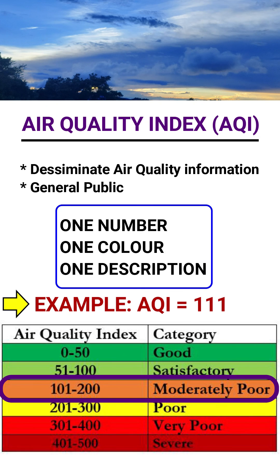Therefore, the objective of the AQI is to disseminate air quality information of an area to the people, by employing the one number, one color, one description initiative or scheme.